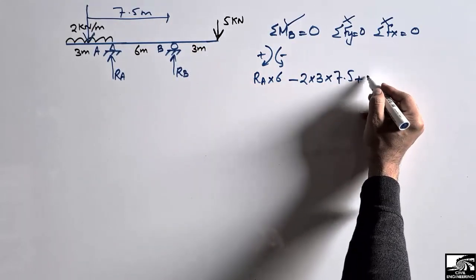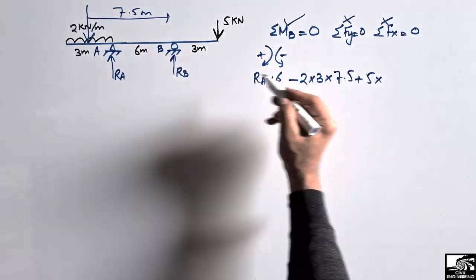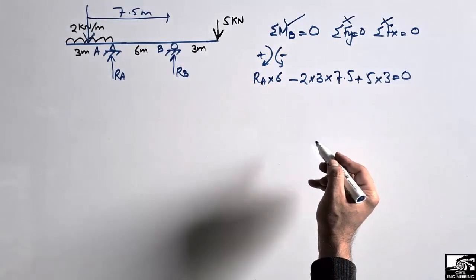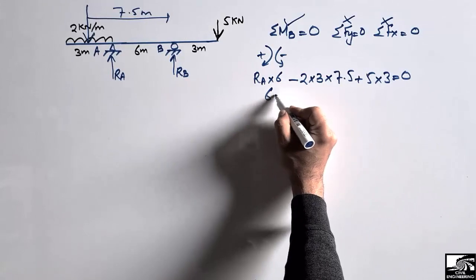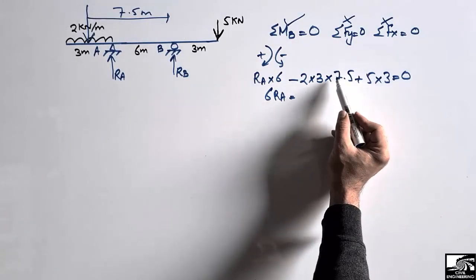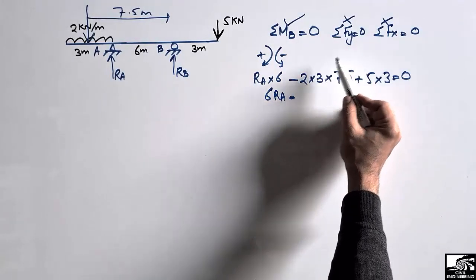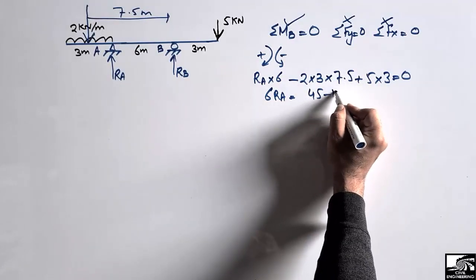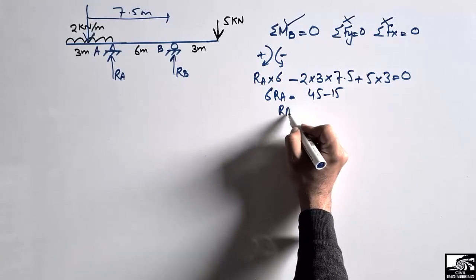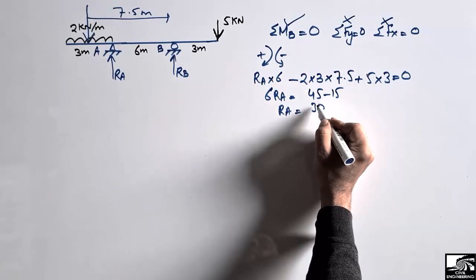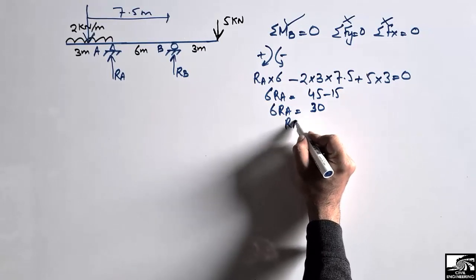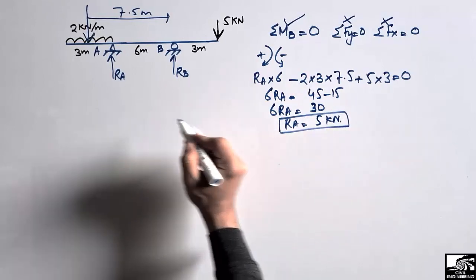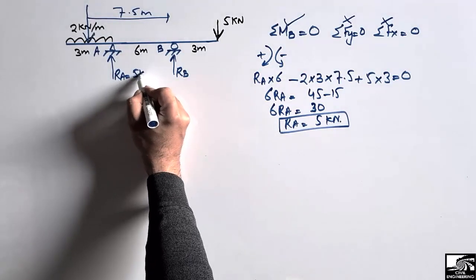This load is acting in the clockwise direction — 5 kN — so plus 5 into the moment arm of 3, equals zero. Now we can find RA: 6·RA equals 45 minus 15, which gives 6·RA equals 30, so RA comes out to be 5 kN. This is our support reaction RA equal to 5 kN.